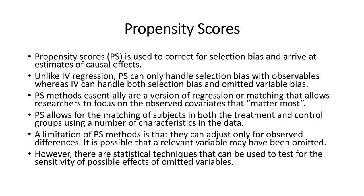Once you've done that, you estimate prediction scores, and those scores are used in a formula to create propensity scores, which are used to match subjects in both the treatment group and the control group. A limitation of the propensity score method is that it adjusts only for observed differences. It is possible that a relevant variable may have been omitted that pertains to the selection process, and if you omitted that variable, you still have omitted variable bias.